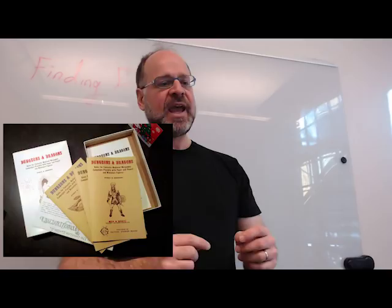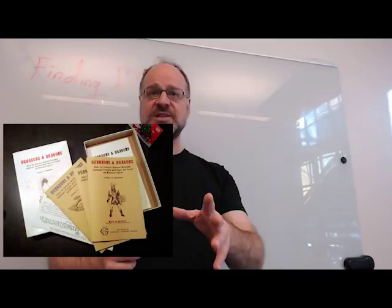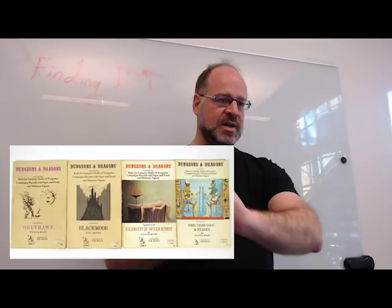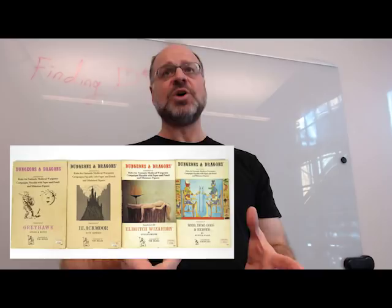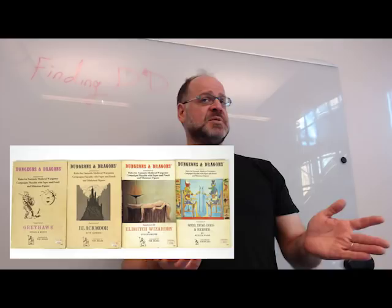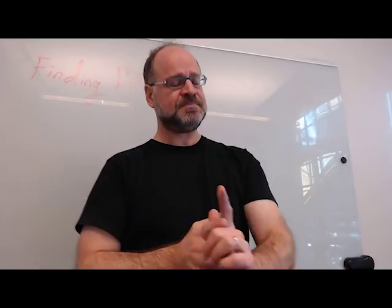People call it a white box - it wasn't a white box, it was a brown box with white stickers. It had three booklets in it. Following its publication over the next two to three years came similarly brown pamphlets: Greyhawk, Blackmoor, Eldritch Wizardry, Gods Demigods and Heroes, and Swords and Spells. So those would comprise the first D&D text - the brown box and those five booklets.